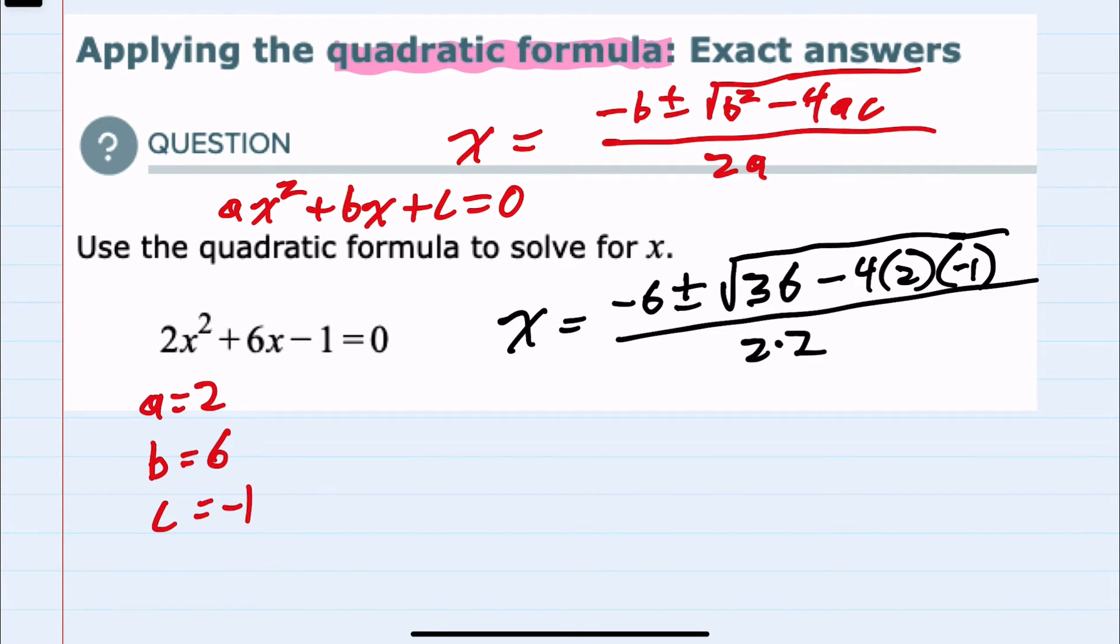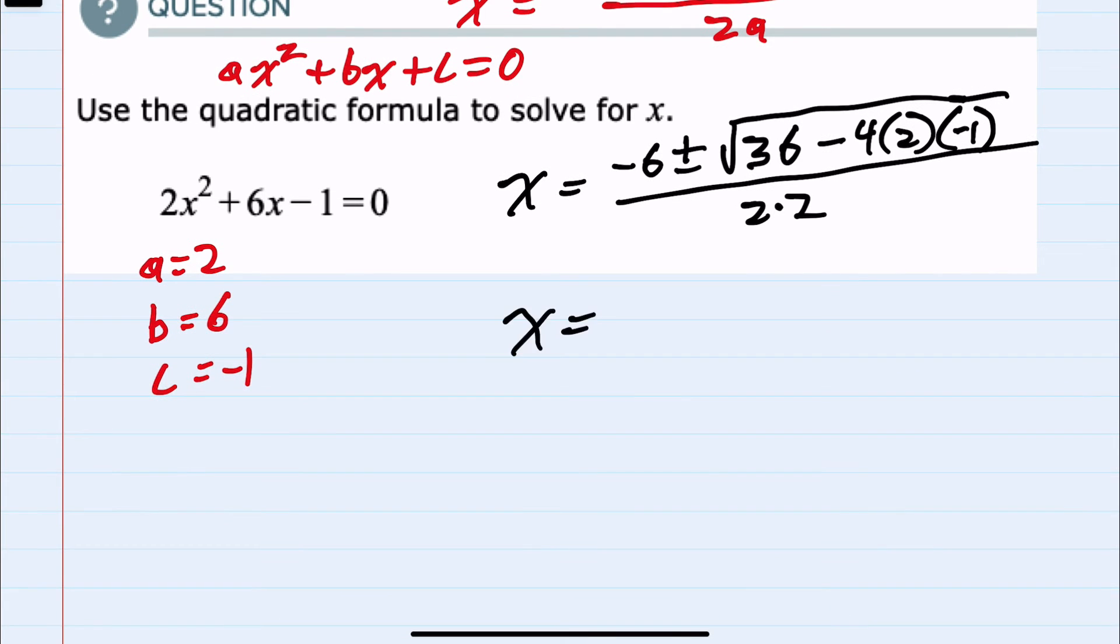Having made the substitution, we can simplify. The first things I would simplify would be the multiplication. So rewriting, this is negative 6 plus or minus the square root of 36. 4 times 2 times negative 1 is negative 8. And the two negatives here cancel, so this would be plus 8 all over 4.